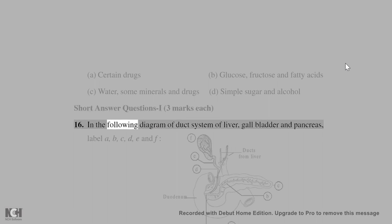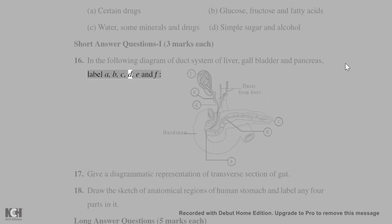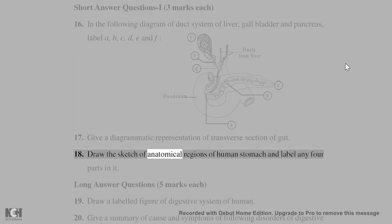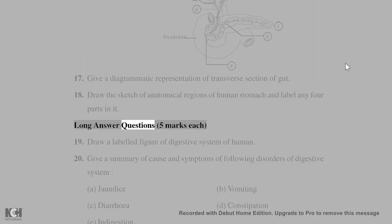Short answer questions (3 marks each): 16. In the following diagram of the duct system of liver, gallbladder, and pancreas — label A, B, C, D, E, and F. 17. Give a diagrammatic representation of the transverse section of the gut. 18. Draw a sketch of the anatomical regions of the human stomach and label any 4 parts.